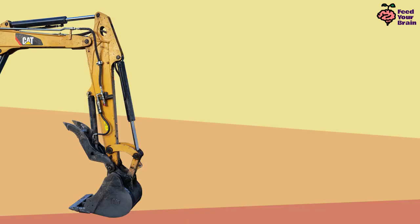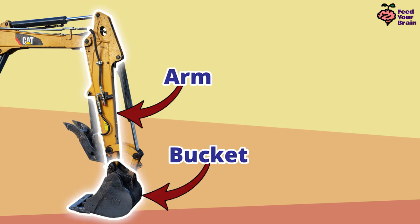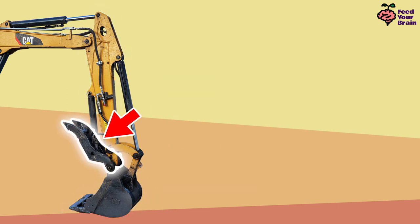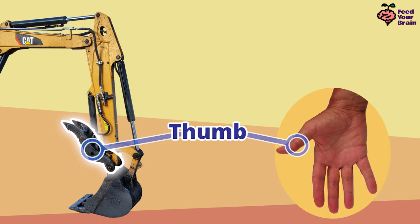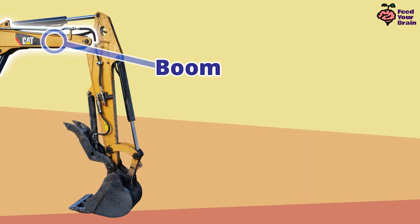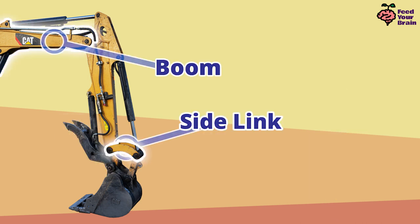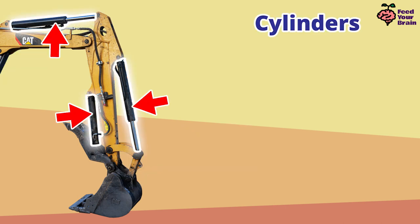Let's look closer at the hydraulics used to power the arm and the bucket. There is an additional attachment here called a thumb — it's called a thumb because it acts just like a real thumb, allowing the bucket to grab things. This is the boom. This is the side link, to help rotate the bucket. And this is the H link, also to help rotate the bucket. These are the hydraulic cylinders that provide power to each part they are connected to. Calling these cylinders is a very general term — let's take a closer look at them.